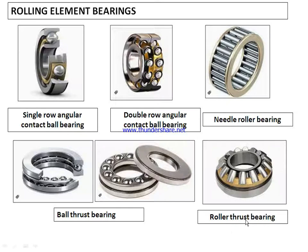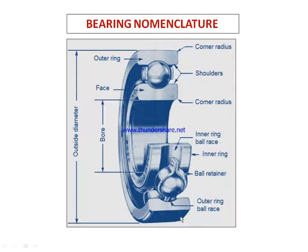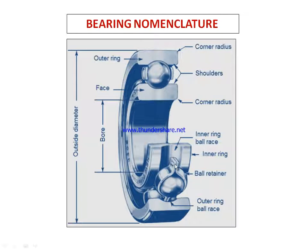Coming to the nomenclature of the bearing: this figure shows a pictorial view of a ball bearing. The outer ring groove is called the outer race or outer ring ball race, and the inner groove is called the inner race or inner ring ball race. The retainer is used to retain the balls in position. The bore diameter is important — this is where the shaft fits and is equal to the shaft diameter. The bearing is mostly specified by this bore diameter, and the outside diameter of the bearing.